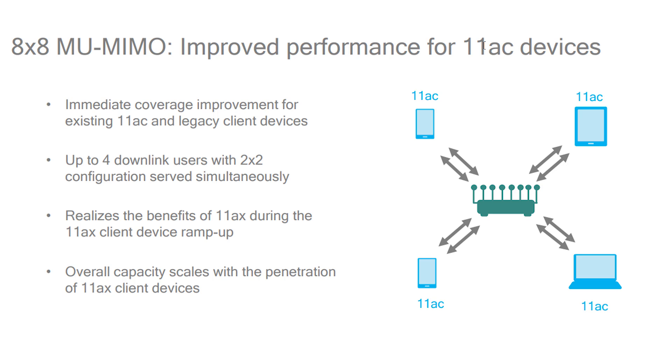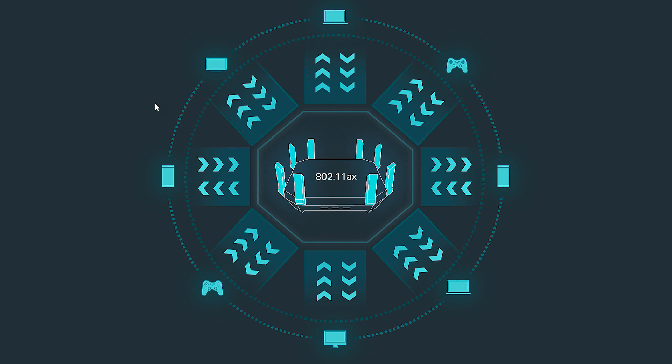MIMO technology was introduced with Wi-Fi 5. Now let's talk about MU-MIMO — Multi-User, Multi-Input, Multi-Output. This technology improves Wi-Fi 6 and Wi-Fi 5. The router can transfer data to multiple users on multiple output channels at the same time. Combined with OFDMA technology, each antenna handles a channel, improving Wi-Fi efficiency and increasing speed.